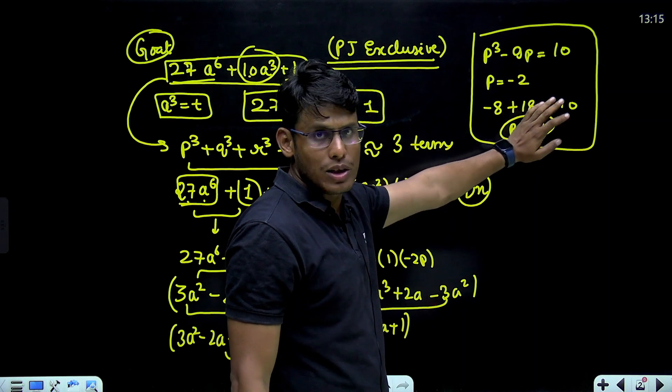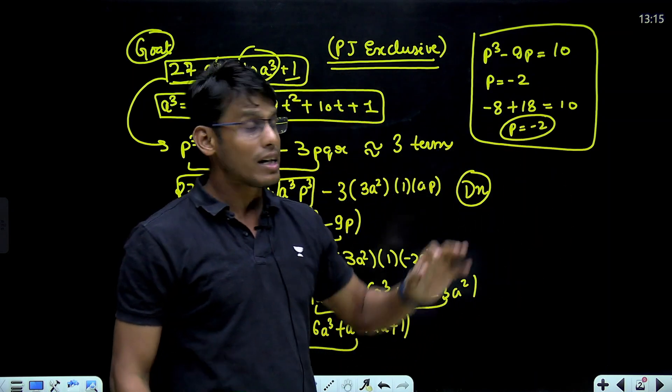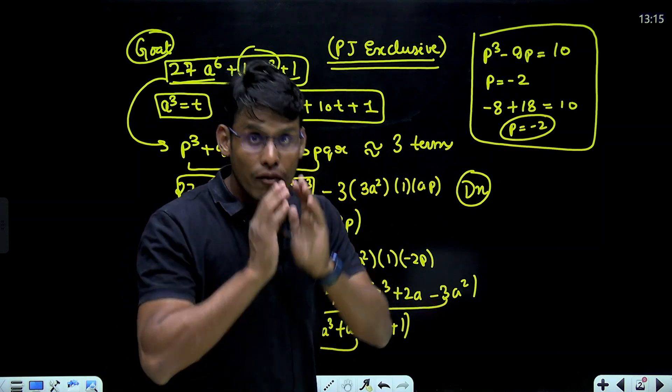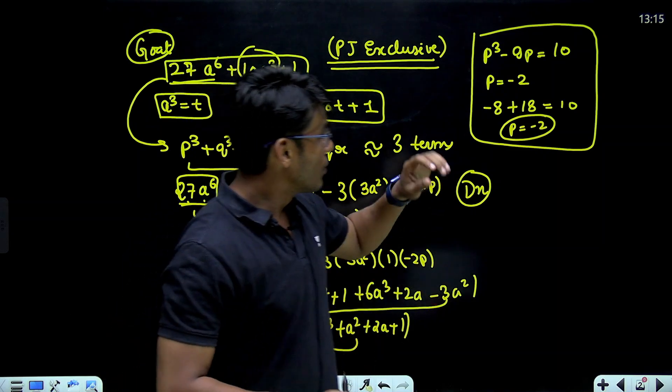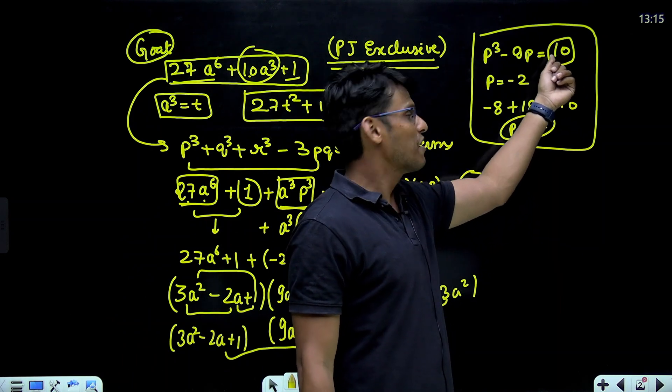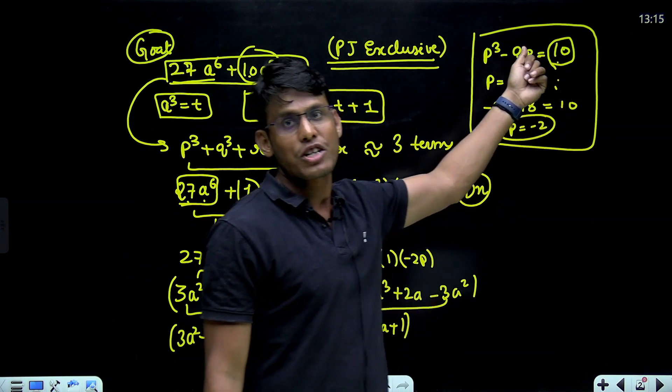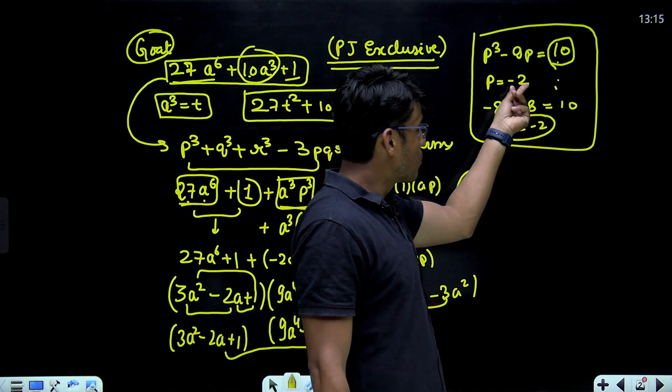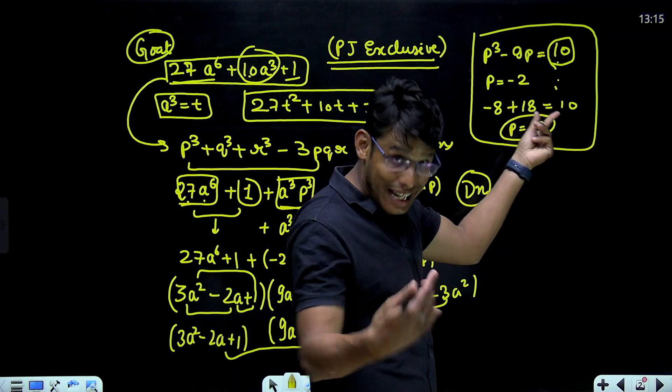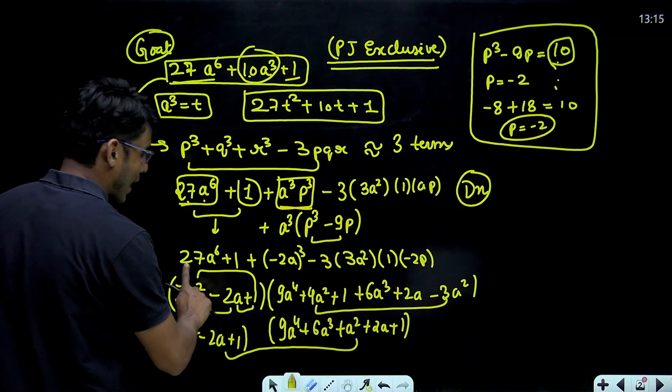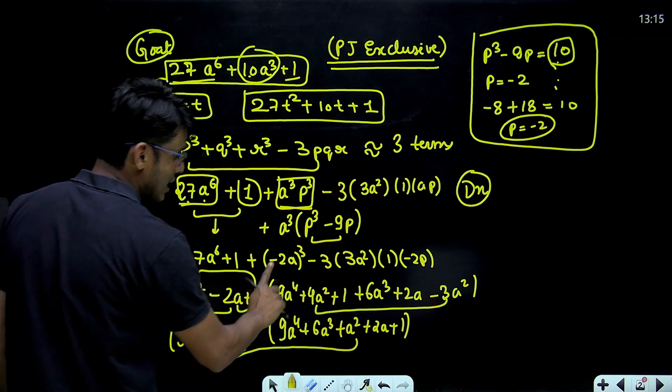p cube minus 9p equal to 10. p is equal to minus 2 is one solution. In the last lecture, we have seen this thing that such cubic equations can be solved using hit and trial. But obviously, while using hit and trial, we will see that the things which are being hit are divisors of this, right? Rational root theorem, integer root theorem which we discussed in the previous lecture. So, I put p equal to minus 2, it is hitting and hence p is equal to minus 2. So, our final thing is this, right?